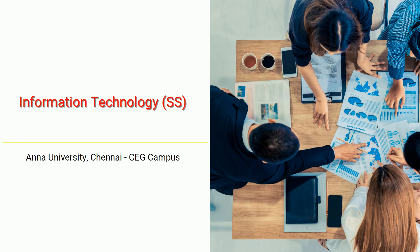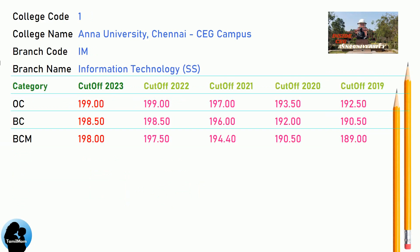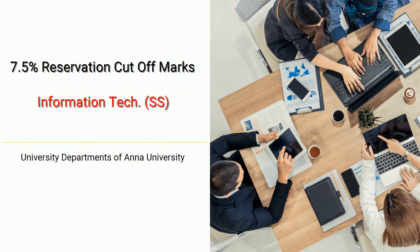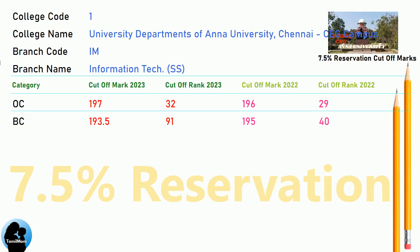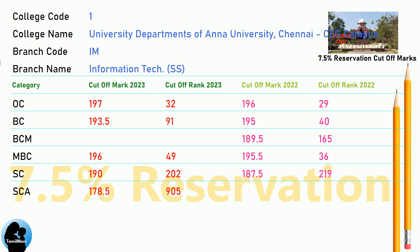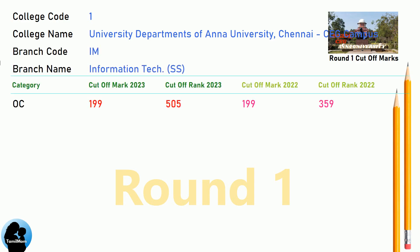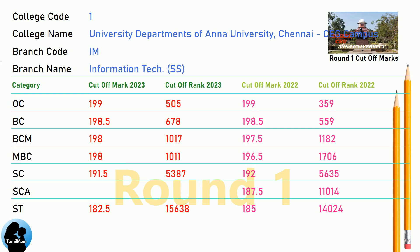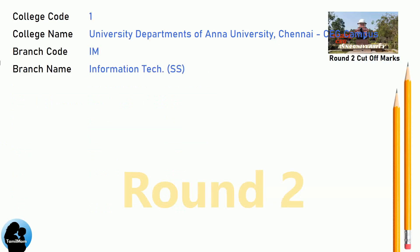DNA Cut-Off for Anna University Chennai CEG Campus in Information Technology. DNA 7.5 Reservation Cut-Off for Anna University Chennai CEG Campus in Information Technology. DNA Round 1 Cut-Off for Anna University Chennai CEG Campus in Information Technology. DNA Round 2 Cut-Off for Anna University Chennai CEG Campus in Information Technology.